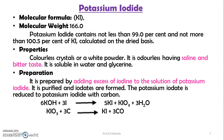The reaction is: 6 KOH + 3 I2 → 5 KI + KIO3 + 3 H2O. Then potassium iodate with 3 molecules of carbon gives potassium iodide plus 3 molecules of carbon monoxide.